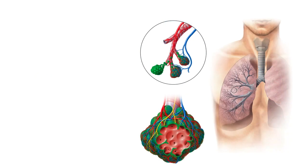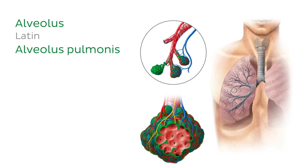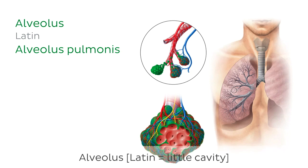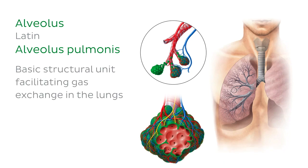These little sacs — what are they? Well, finally we come to the end of the pathway for oxygen molecules in the lungs: the alveoli. Highlighted in green are many alveoli, which is plural for alveolus. An alveolus, which comes from the Latin meaning 'little cavity,' is the basic structural unit facilitating gas exchange in the lungs.